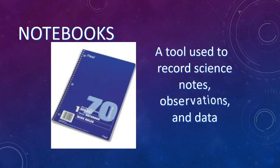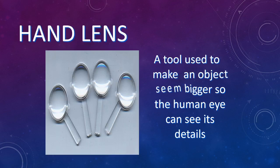Notebooks are very, very important in science experiments because you want to be able to write down your observations and data. Sometimes I will give you a printed lab sheet with where you need to write your observations, but you can always use a notebook as well. A hand lens is like a small magnifying glass — it allows you to make objects a little bit bigger so that you can see the finer details more easily.